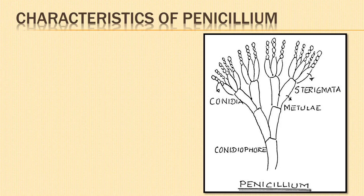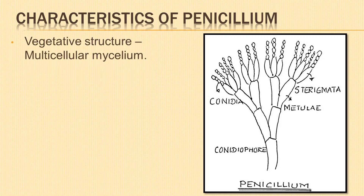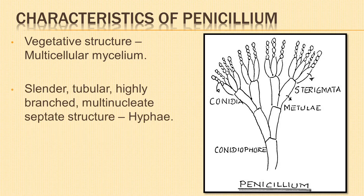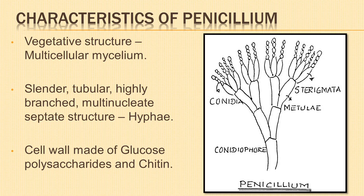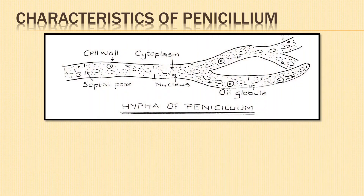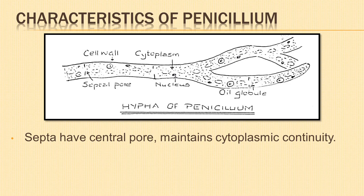Now let us learn about the characteristics of penicillium. The vegetative structure of penicillium is a multicellular mycelium. It is composed of colorless, slender, tubular, highly branched, multi-nucleate septate structures known as hyphae. The cell wall of penicillium is made up of glucose polysaccharide and chitin. The cells are short and the septa between the cells have a central pore. The cell relies on this central pore to maintain cytoplasmic continuity or connections.